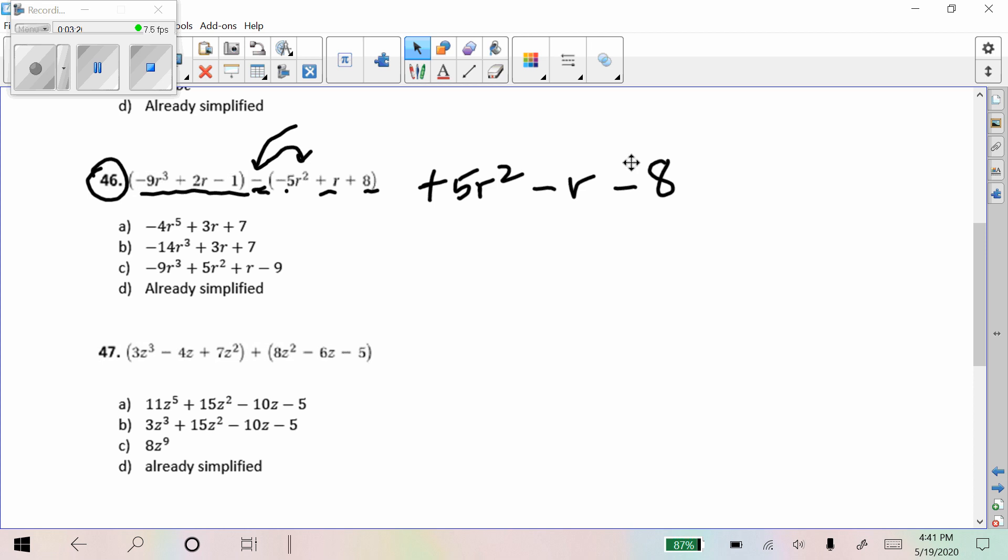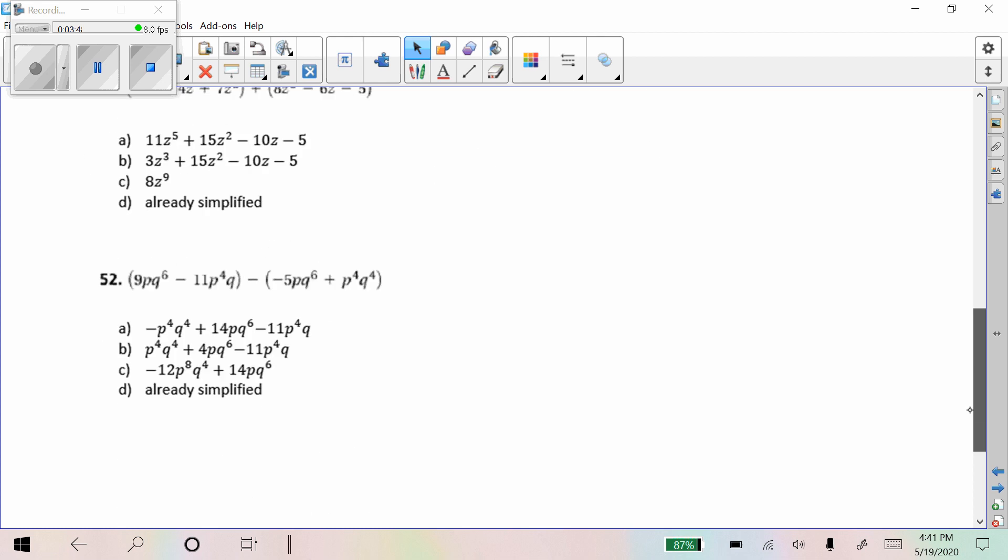Now, combining like terms, we get negative nine R to the third is the highest degree. And then we get plus five R to the second. And then we get plus R. Uh-oh. I see that the correct answer is actually not even here. So yeah, that might have been the reason why someone got that one wrong.